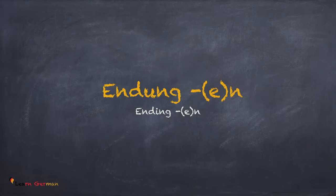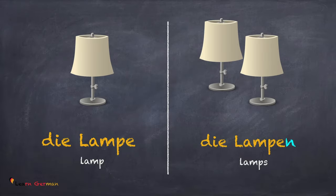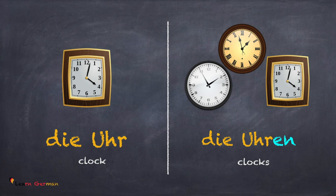The next category is Endung N or EN. Die Lampe — Die Lampen. Words ending with an E mostly take an N to form their plural form. Let's move to the next one: Die Uhr — Die Uhren.